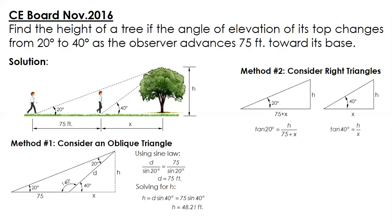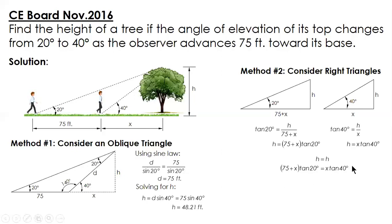After setting up these equations, cross-multiply and solve for H. Using the calculator — input the equation and use shift-solve — we get x equals 57.453. After solving for x, substitute into either equation 1 or equation 2. By substitution, H equals 48.21 feet.